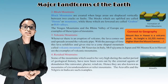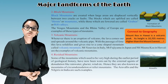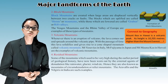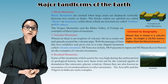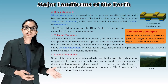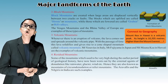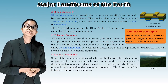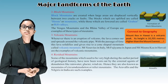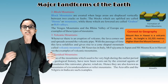The last type is residual mountains. Some mountains which used to be very high during earlier geological history have now been worn out by external agents of denudation like rainwater, glaciers, and wind. Hence, they are also known as mountains of circumdenudation or relict mountains. The Aravallis and the Nilgiris in India are such examples.